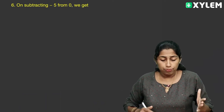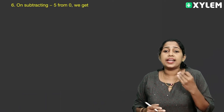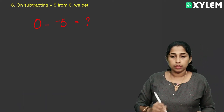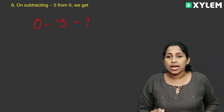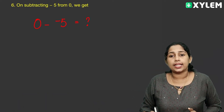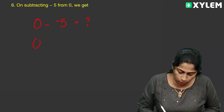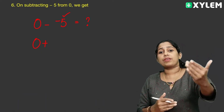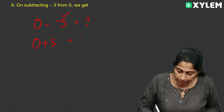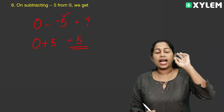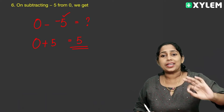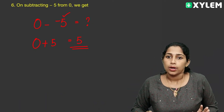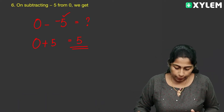On subtracting minus 5 from 0, what do we get? Zero minus minus 5. In subtraction, we add the additive inverse. The additive inverse of minus 5 is plus 5. So the answer is plus 5, which is 5.